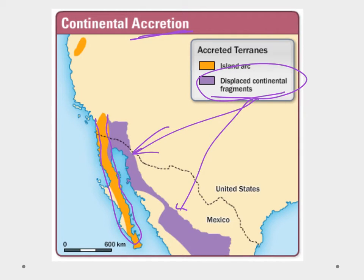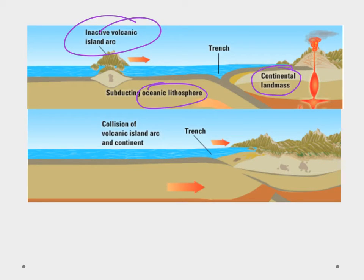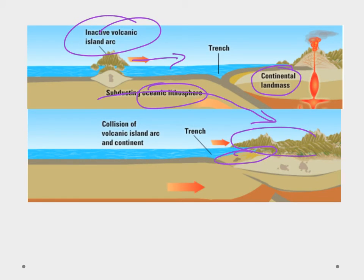Let's look at what accretion really looks like. In this picture we see a continental landmass, an oceanic landmass, and a convergent boundary. There's an inactive volcanic island arc, and as the oceanic plate subducts and moves toward the continental plate, the island arc moves in too. Ultimately it fills in where the trench is, and we can also see mountain building where the collision actually occurs. So these islands break off, fill in the trench, and add new material to the continental plate through accretion.